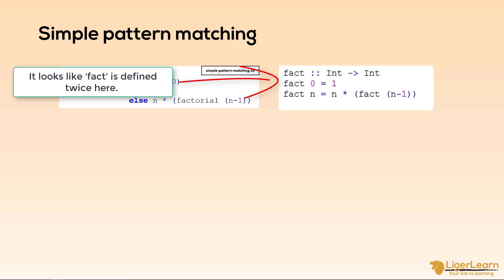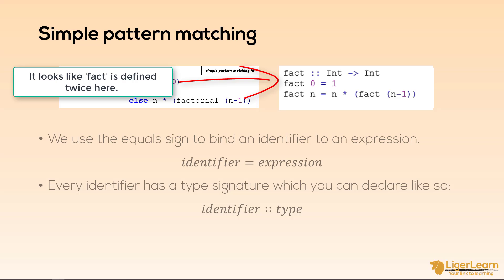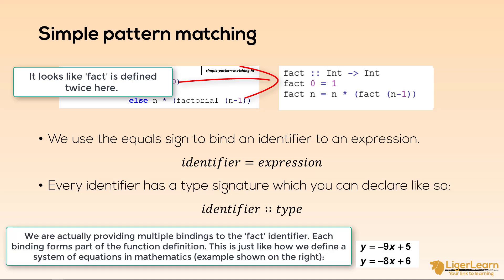When we initially spoke about defining functions, I said we use the equals sign to bind an identifier to an expression, and each identifier has a specific type signature. An identifier is just a name for a variable or the name for a function, so our identifiers in this case are the function names of factorial and fact.